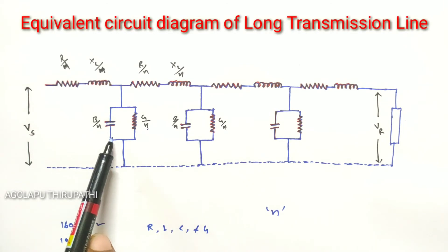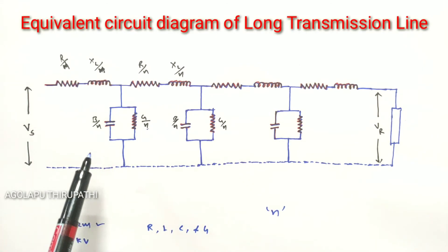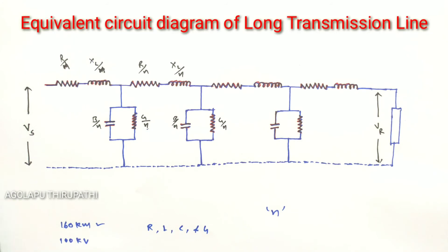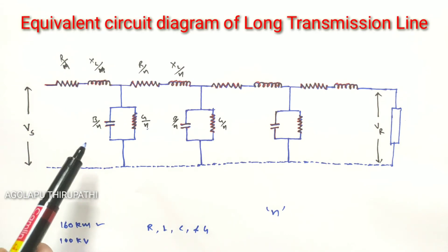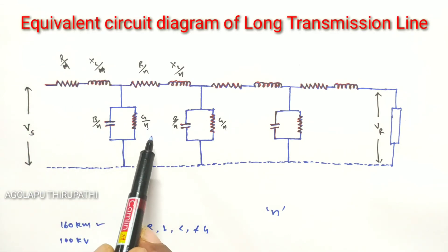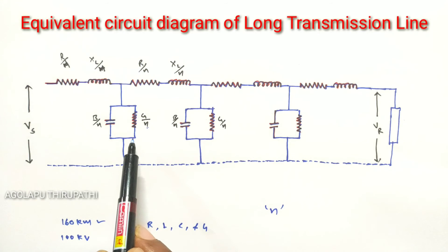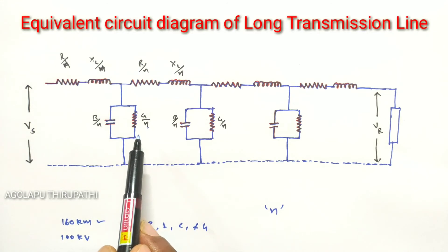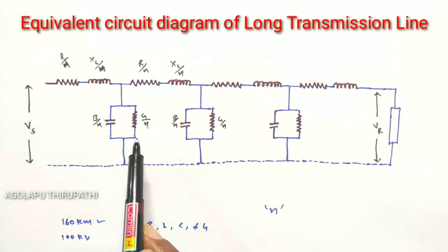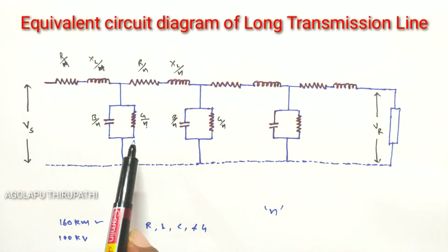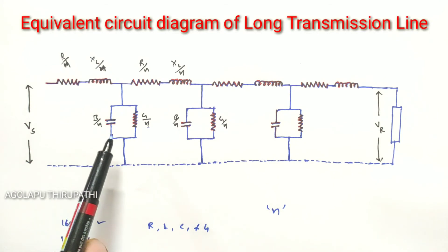The leakage susceptance is taken due to the capacitance effect between two lines — either phase to neutral or between two phases. Leakage conductance is taken due to energy losses occurring through leakage over the insulators or due to the effect of corona.